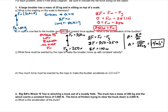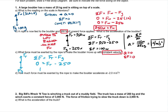Same situation, but now I want to make the boulder move up with constant velocity. Seeing constant velocity right away tells me the acceleration is zero and the net force is zero. We still have the force of gravity down and the tension force up. So net force is zero, equal to the tension force minus 250 newtons. The tension force comes out to be 250 newtons — those two forces balance out.